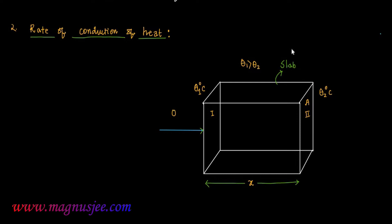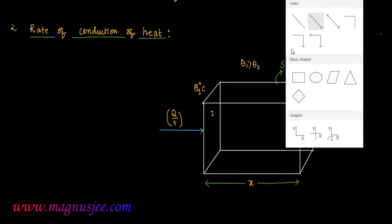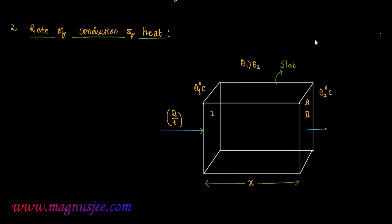The rate of conduction of heat is Q by T. Q by T is the rate of conduction of heat, where Q is the heat energy conducted through the slab in time T. In this case, heat energy will be conducted at rate Q by T.